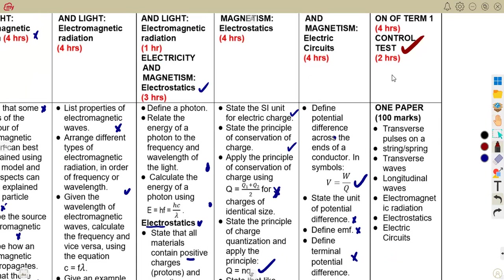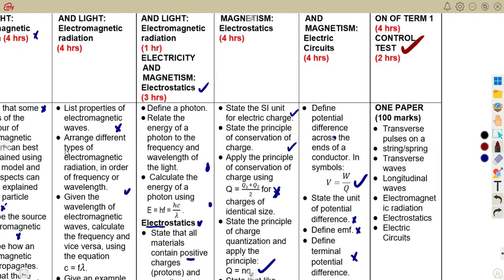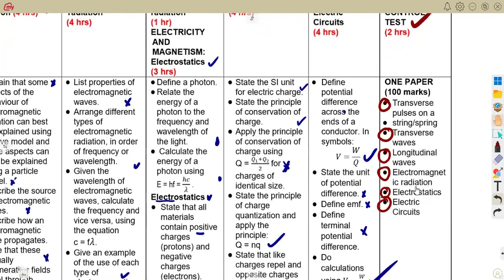We are going to have a control test in March — one paper, 100 marks. This will cover everything done in Term 1: transverse pulses on a string or spring, transverse waves, longitudinal waves, electromagnetic radiation, electrostatics, and electric circuits. Make sure you cover everything up to the end so that you will be able to sit for that control test.